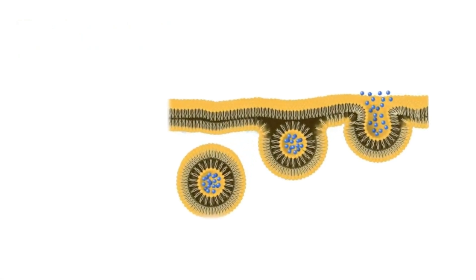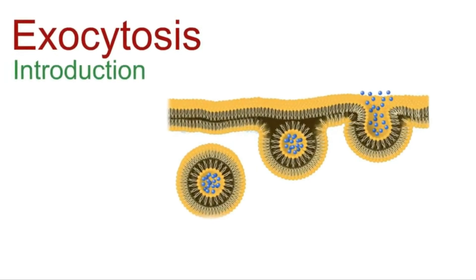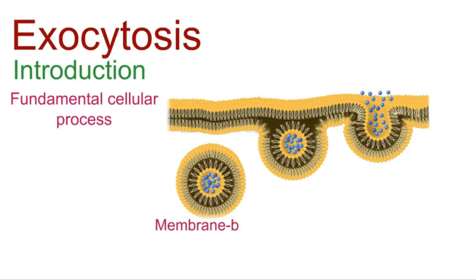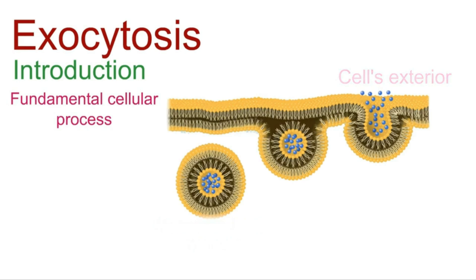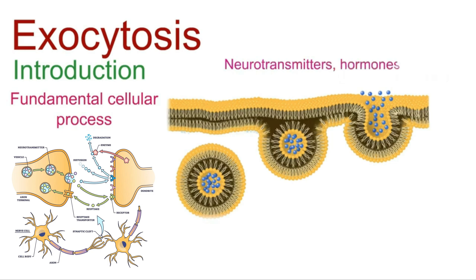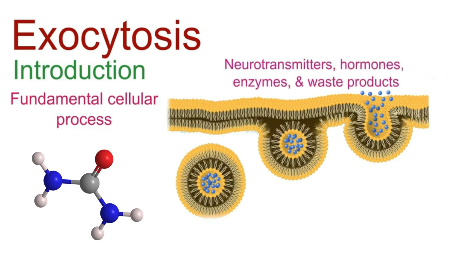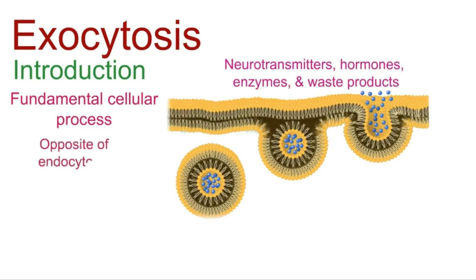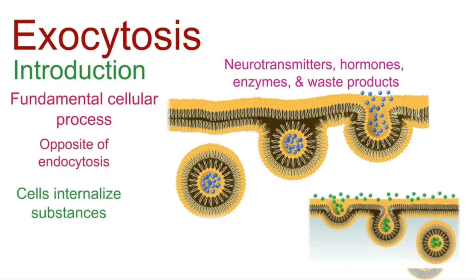Now let's talk about exocytosis. Exocytosis is a fundamental cellular process that involves the active transport of molecules, typically large and often membrane-bound vesicles, from within a cell to the cell's exterior. It allows cells to release a variety of substances such as neurotransmitters, hormones, enzymes, and waste products. It is the opposite of endocytosis, where cells internalize substances through processes like phagocytosis or pinocytosis.